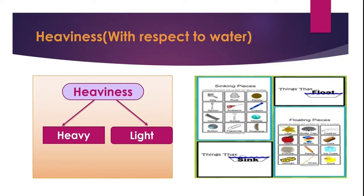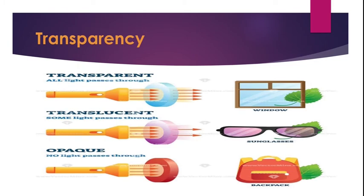Next comes, which is the last part, transparency. On the basis of transparency, materials are of three types: transparent, translucent, and opaque. Transparent objects allow all the light to pass through them, so we can see the transparent objects clearly and easily.